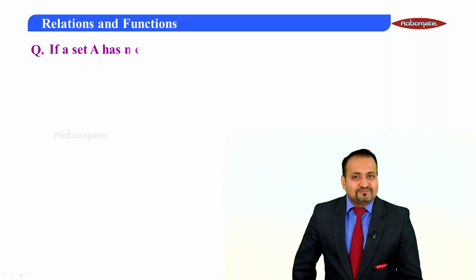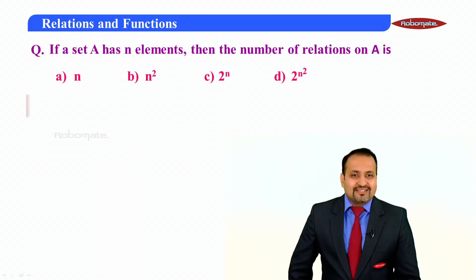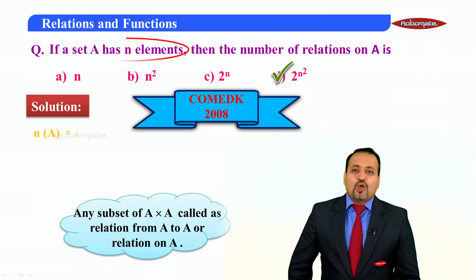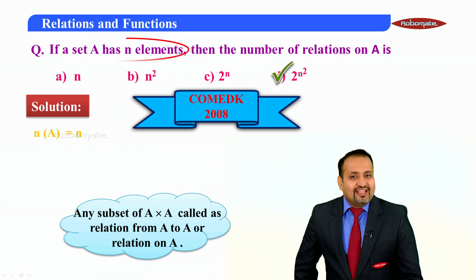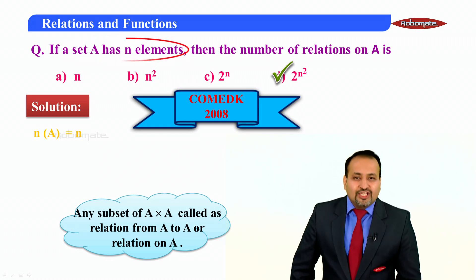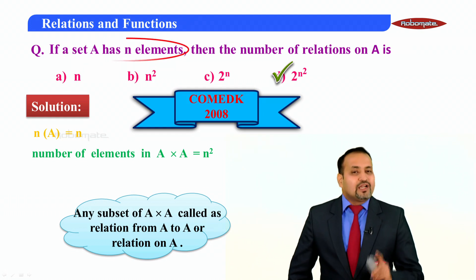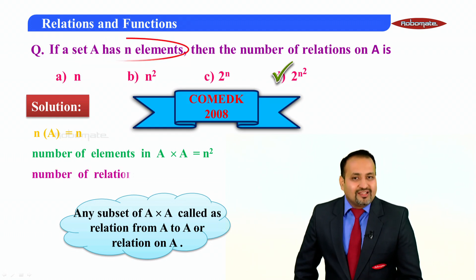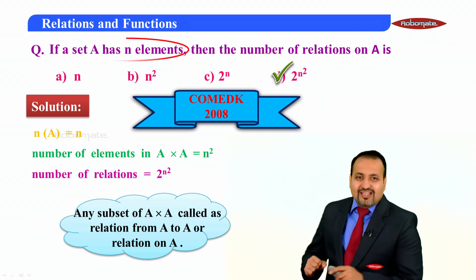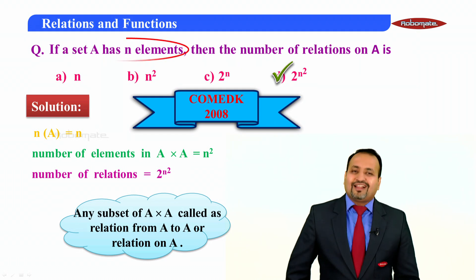If a set A has n elements, then the number of relations on A is — four options given. This question appeared in Comet K 2008. Any subset of A cross A is a relation on A. Here n(A) = n, so the number of elements in A cross A is n squared. Therefore, the number of relations on A is 2^(n²). That is why option D is the correct answer.